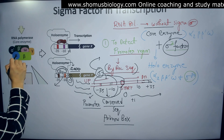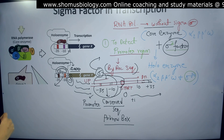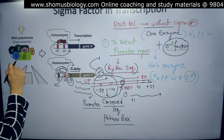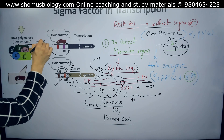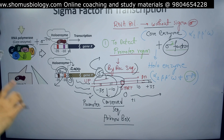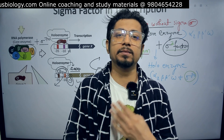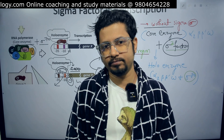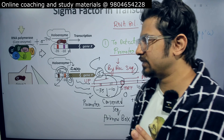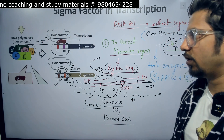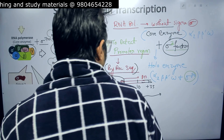Looking at the RNA polymerase structure, we have alpha and alpha prime, beta, beta prime, and omega subunits. Apart from this core enzyme, sigma 70 is involved to make the holoenzyme. Remember: the holoenzyme is with more subunits — core enzyme with fewer. Addition of a sigma factor converts the core enzyme to the holoenzyme of RNA polymerase.